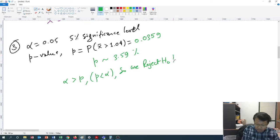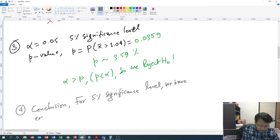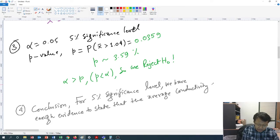Okay, that's it. Now the conclusion: for 5 percent significance level, since that's 5 percent right, sufficient enough evidence to state that the average conductivity of the glass is greater than one.